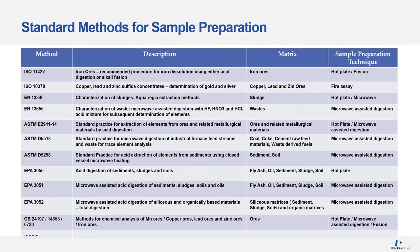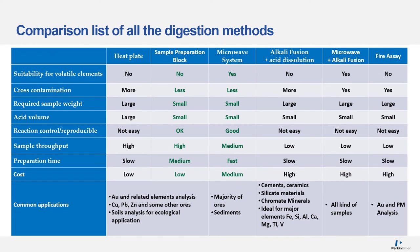Standard methods are available from a variety of organizations around the world, including ISO (International Organization for Standards), EN (European Standards), ASTM (American Society for Testing and Materials), EPA (Environmental Protection Agency), and GB (China National Standard). For the majority of ores and geological samples, digestion with a sample preparation block and microwave system have the strongest advantages: less contamination, small acid use, good reaction control, less preparation time, and the ability to meet high sample throughput.